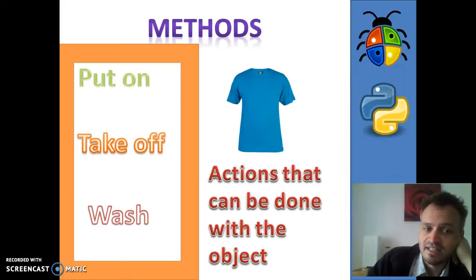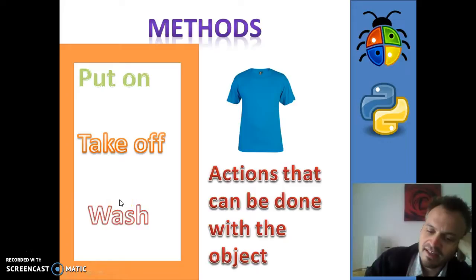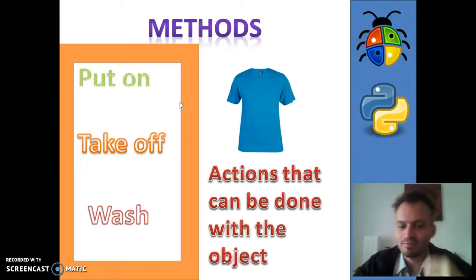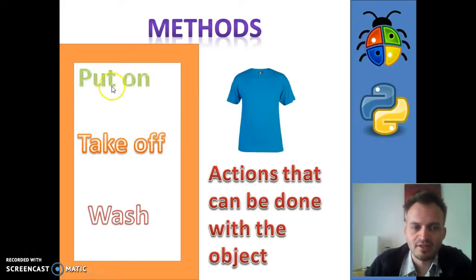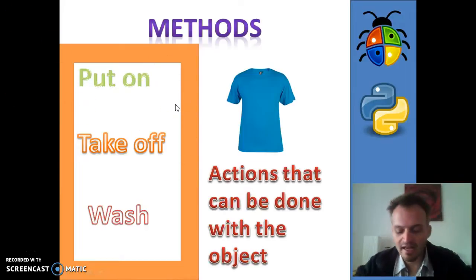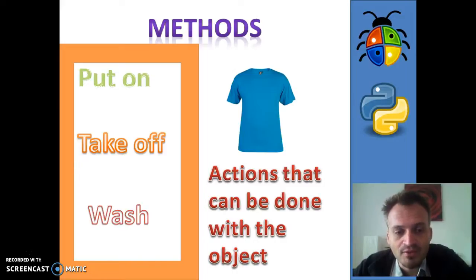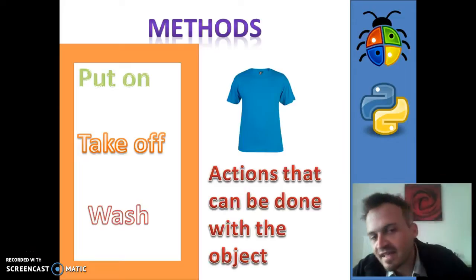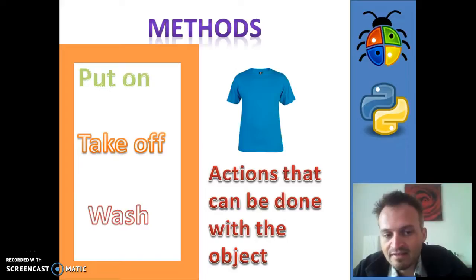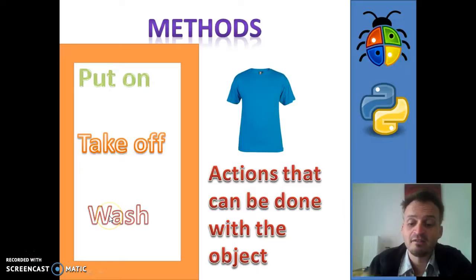The other side of that is the methods. Methods are the actions that can be done with the object — we can put on the t-shirt, we can take it off, we can wash it. These have to be given to the class beforehand so that it knows what it can do. This is kind of like our actors saying lines, or reacting if someone says something — that's going to be in the method side. Methods are really similar to what we did in the last video, which was functions. When it's outside of a class, it's called a function, and when it's inside of a class, it's called a method. There's a small distinction between the two, but they have a similar idea and in fact they work coding-wise in almost identical ways.